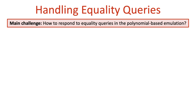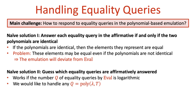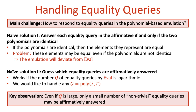The main challenge that remains is how to answer equality queries in the polynomial-based emulation. Consider two naive solutions. The first is to reply affirmatively if and only if the two associated polynomials are identical. However, it might be the case that the elements being compared are actually equal as Z_n elements even though they are distinct as formal polynomials, causing the emulation to deviate from eval. A second approach might be to guess which equality queries should be affirmatively answered, but we want to handle evaluation algorithms that issue any polynomial number of equality queries. The key observation is that even though this number may be large, only a small number of non-trivial equality queries may be affirmatively answered.